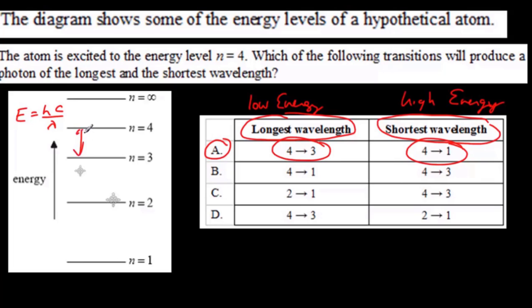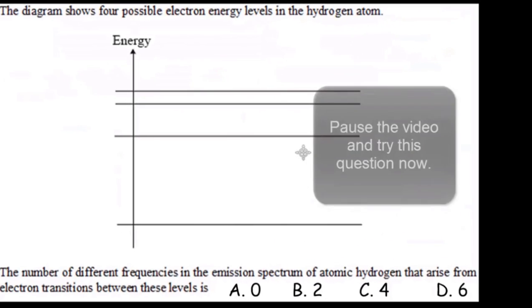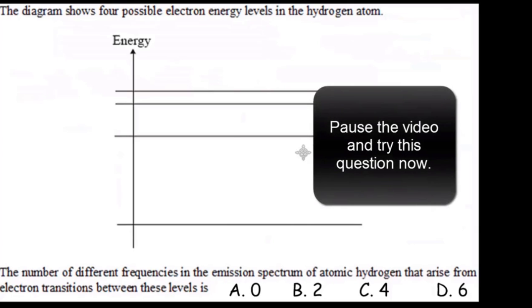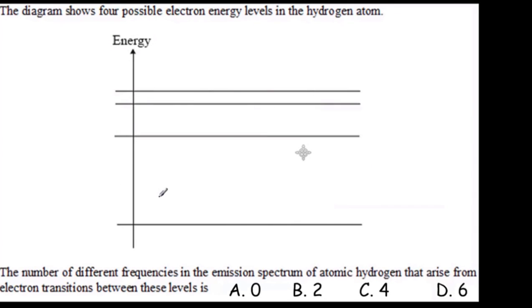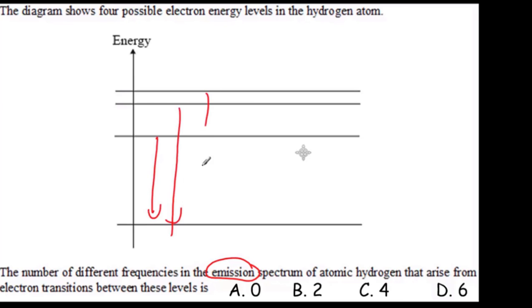Another IB question. It's an emission spectrum, so we're only considering transitions from high energy to low energy to produce photons. Let's count them up: we can go from here to here, here to here, and here to here — that's 3. We can drop from here to here and from here to here — that's 4, 5. And then one more makes 6. So the correct answer is D, 6.